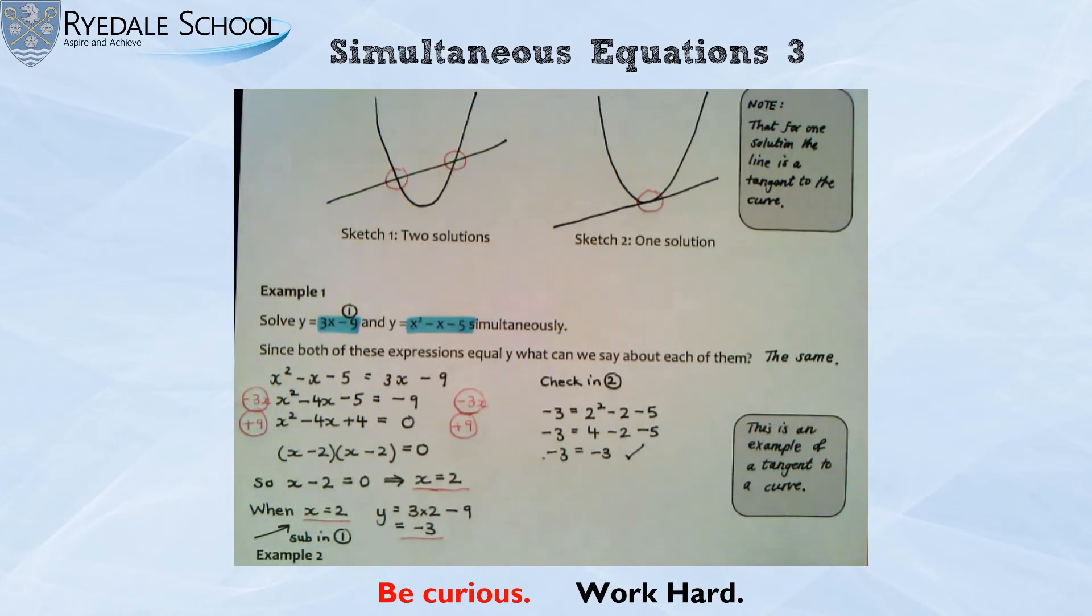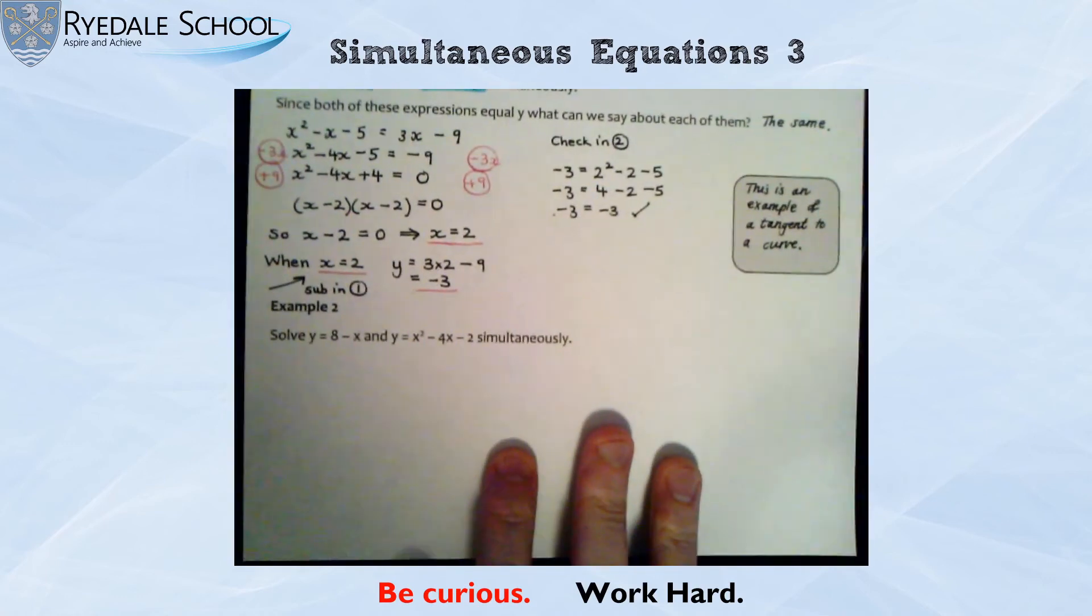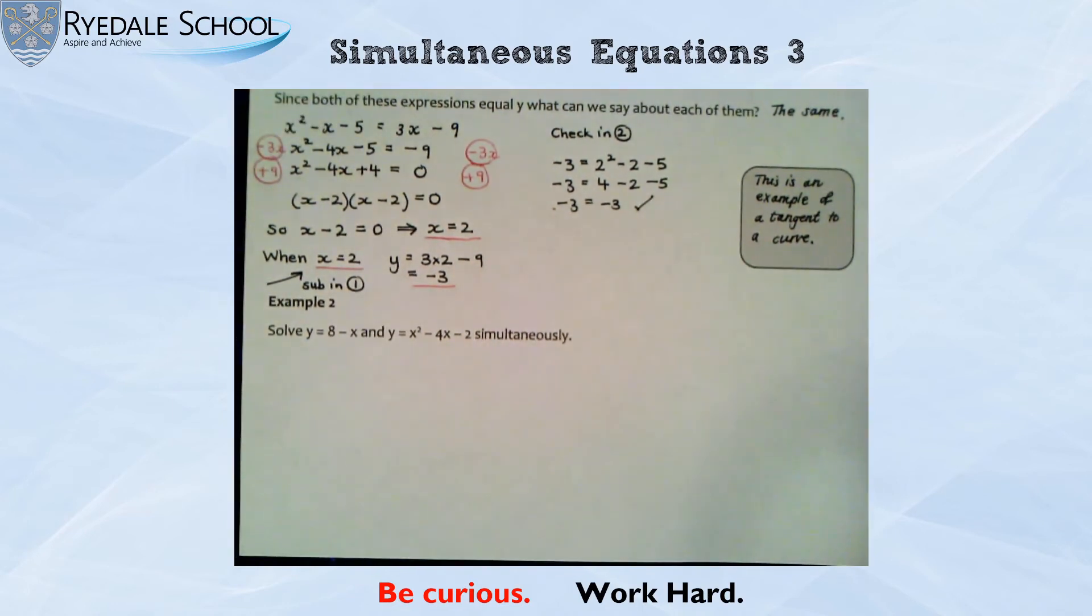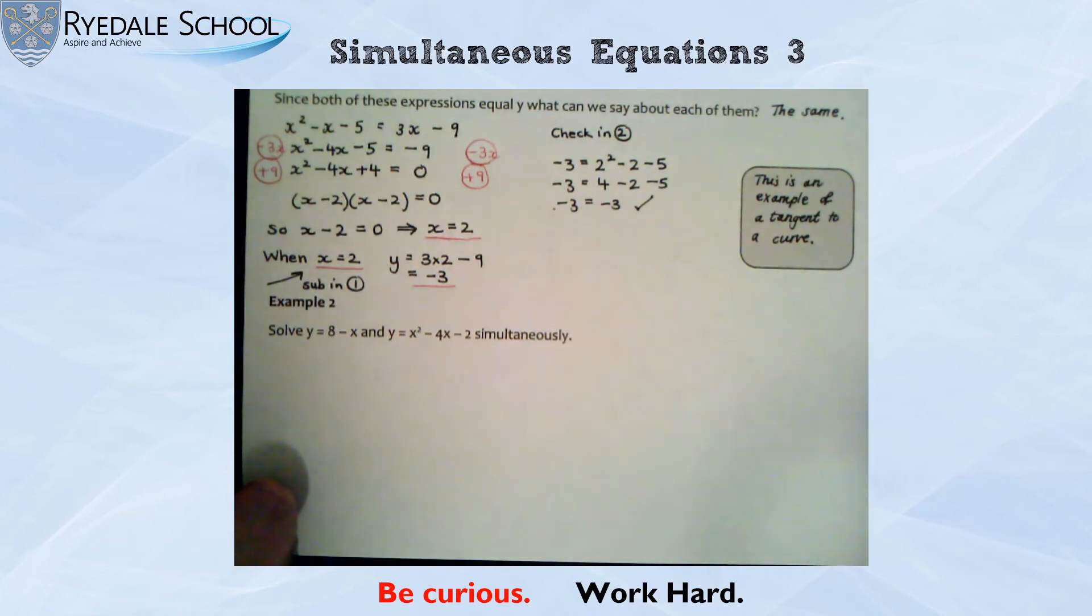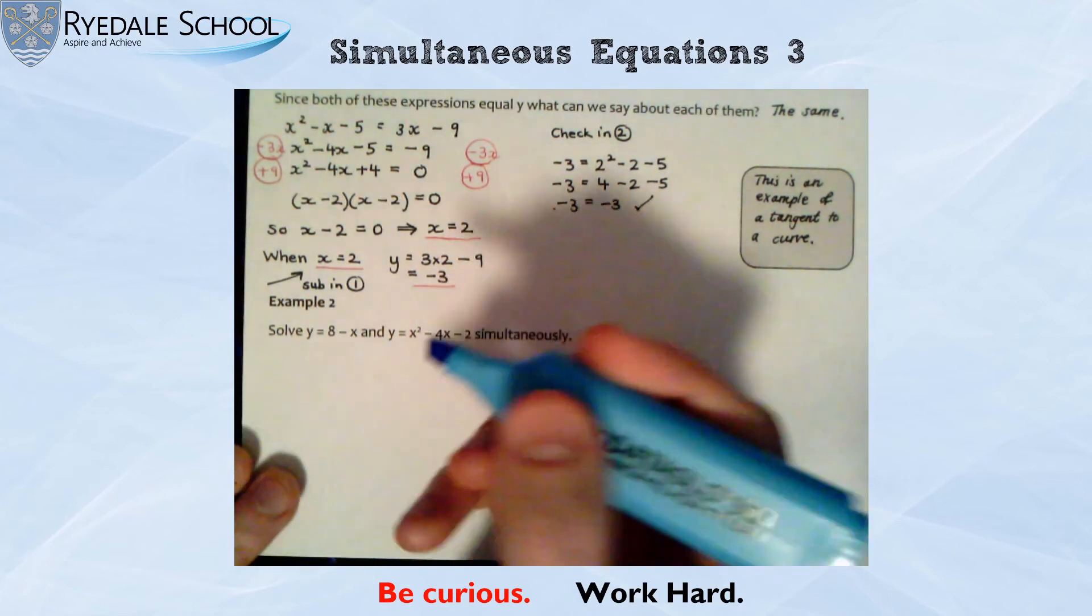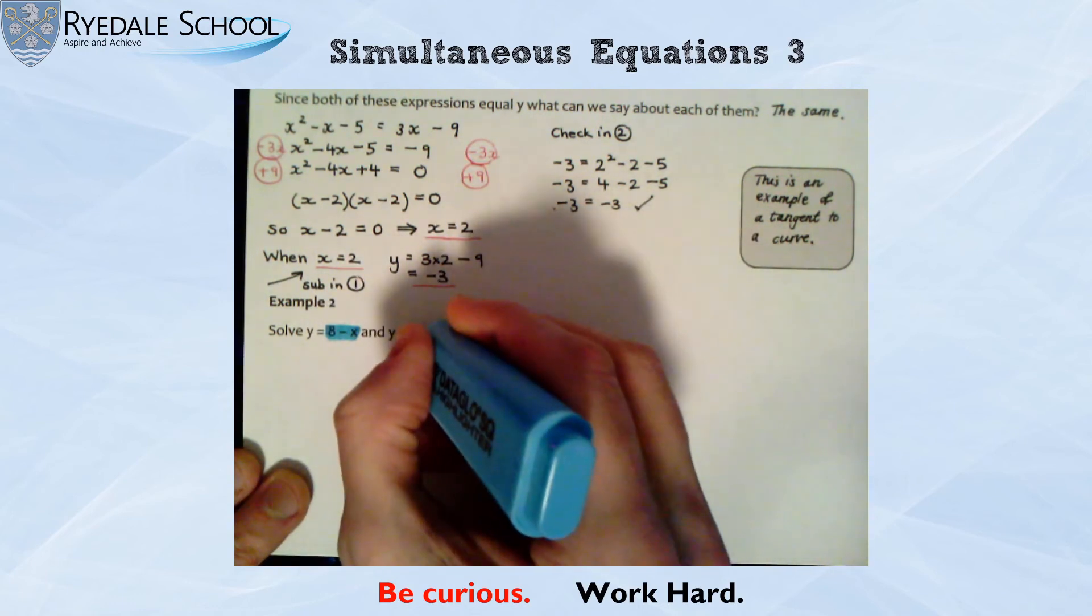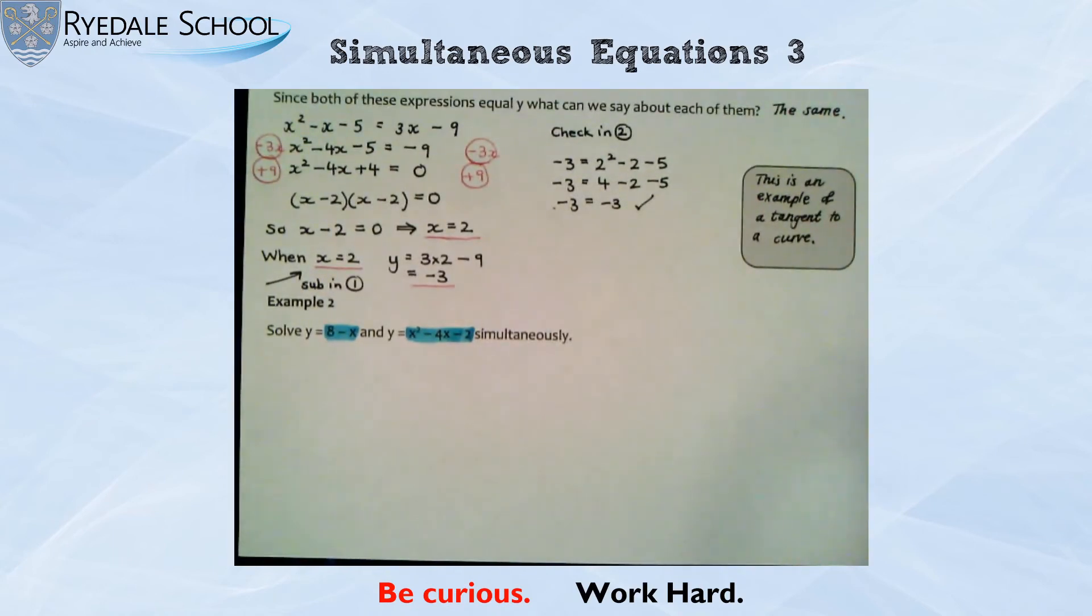Let's look at the second example. And this is set up in exactly the same way. And the questions that you do for me later are all going to be of this type where you can equate your two equations. So you can see we've got solve y equals 8 take away x and y equals x squared take 4x take 2 simultaneously. Now, you could pause the video here if you want and have a go at this one yourself. If you're not feeling that confident, then by all means, just follow along with me.